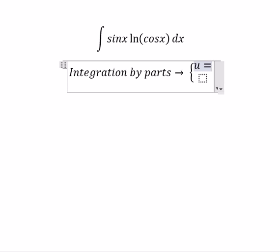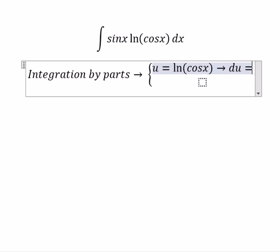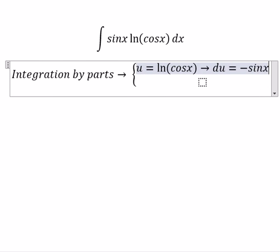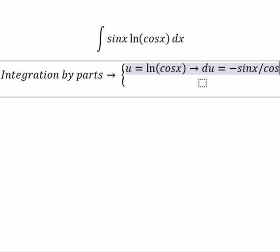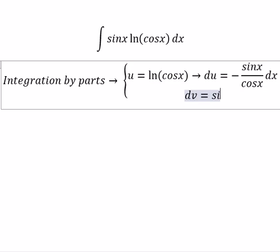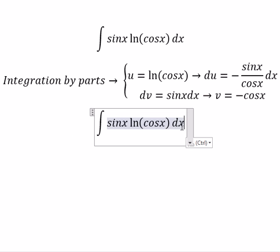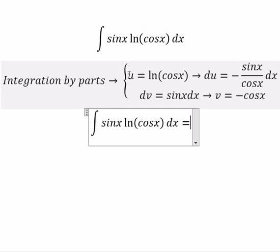u equals ln of cos x. du, we get negative sin x over cos x dx. dv, we get sin x dx, so v equals negative cos x. So we have u multiplied with v.